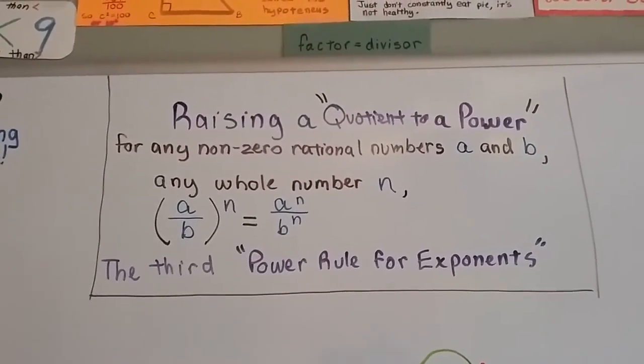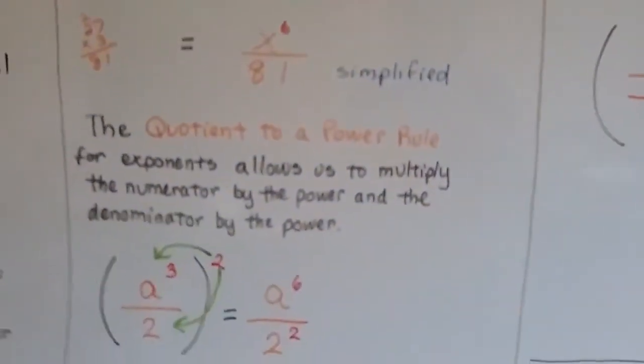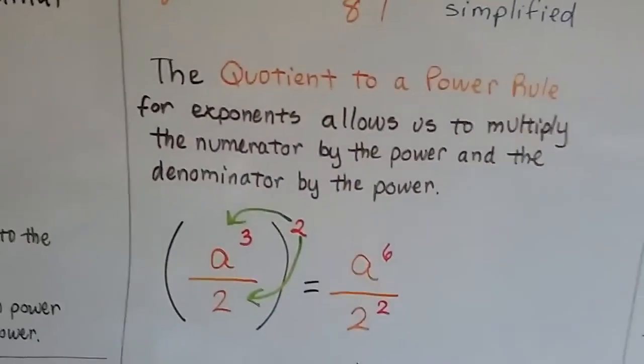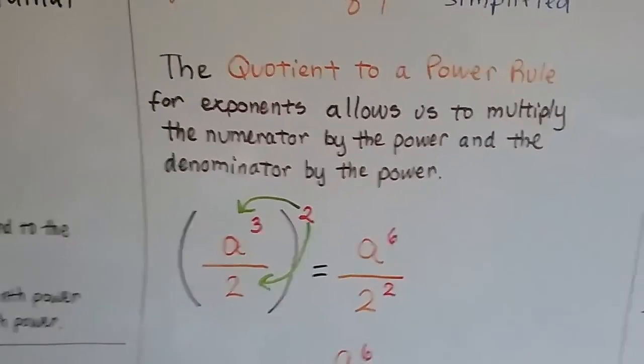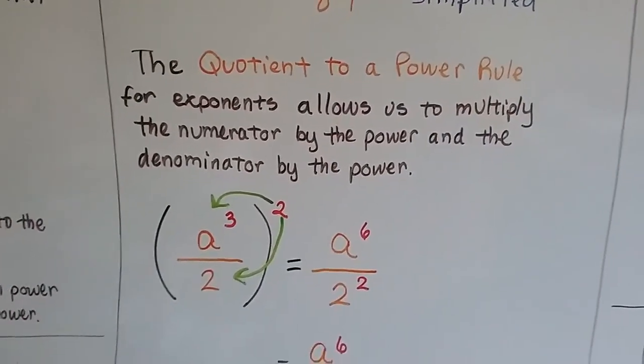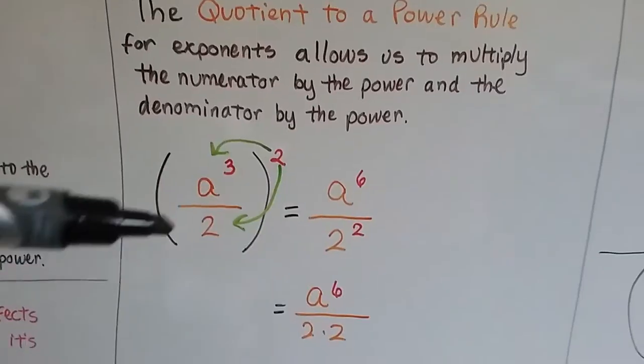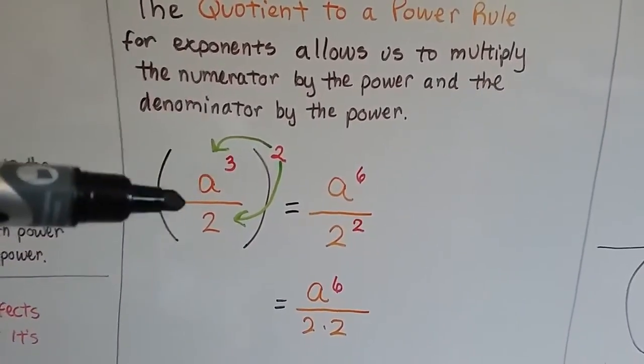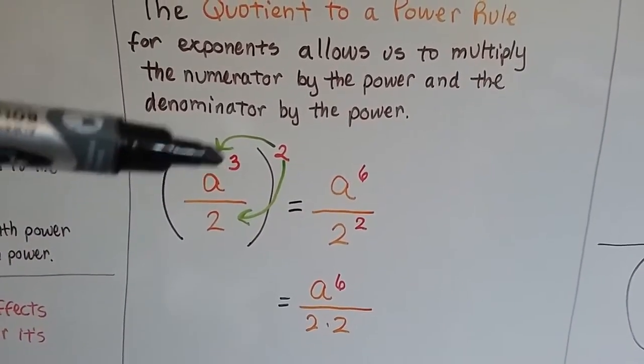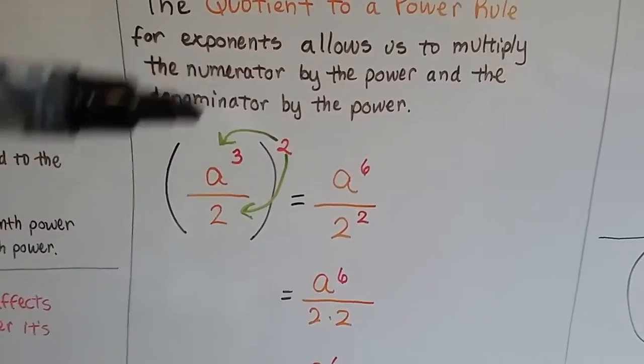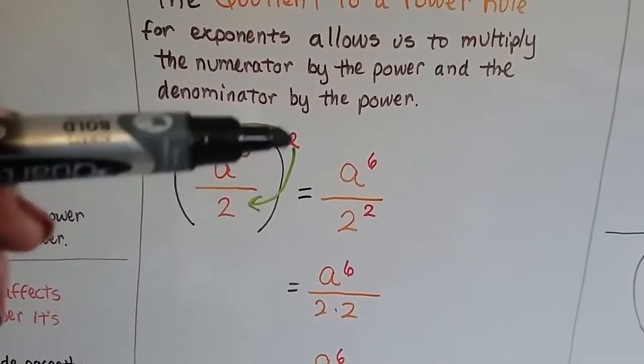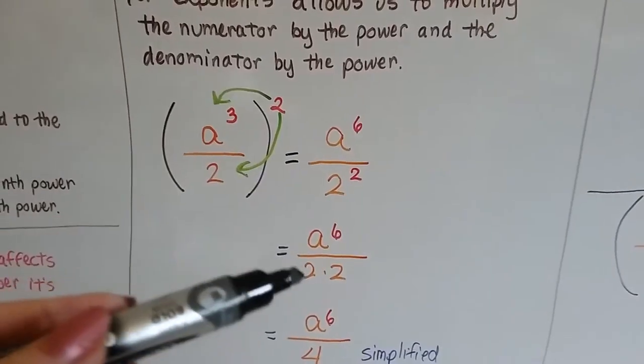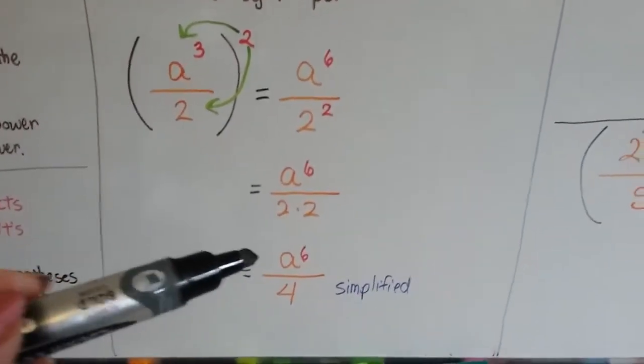And that's the third and last power rule for exponents. So the quotient to a power rule for exponents allows us to multiply the numerator by the power and then the denominator by the power. a to the third divided by 2 is a to the 3 times 2, a to the sixth divided by 2 to the second power. 2 to the second power is 2 times 2.